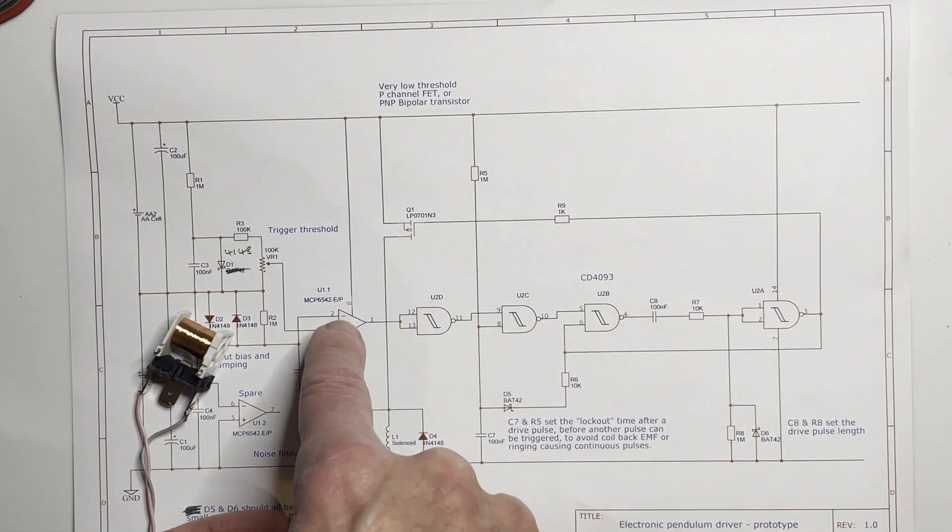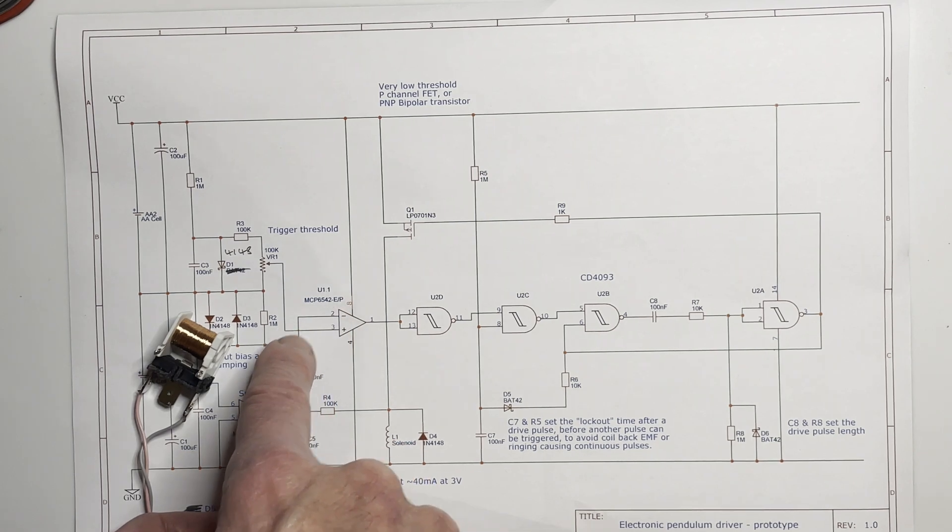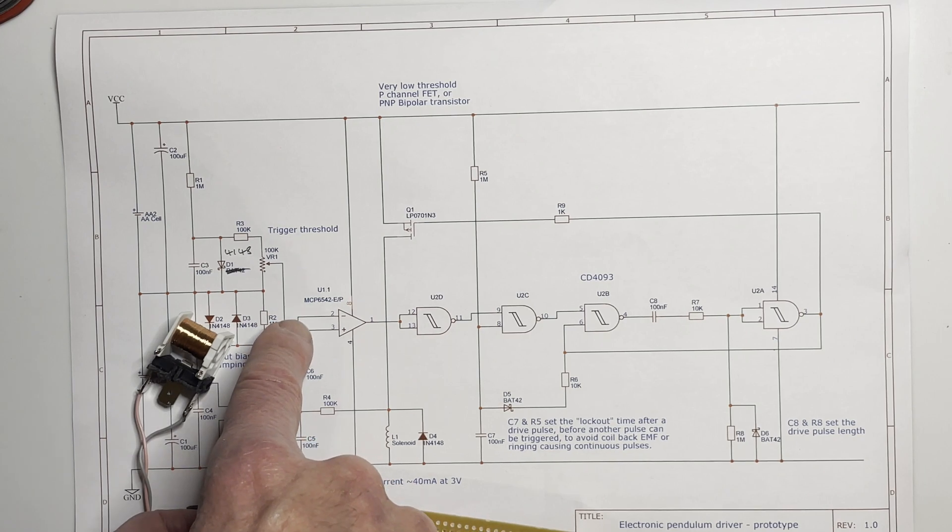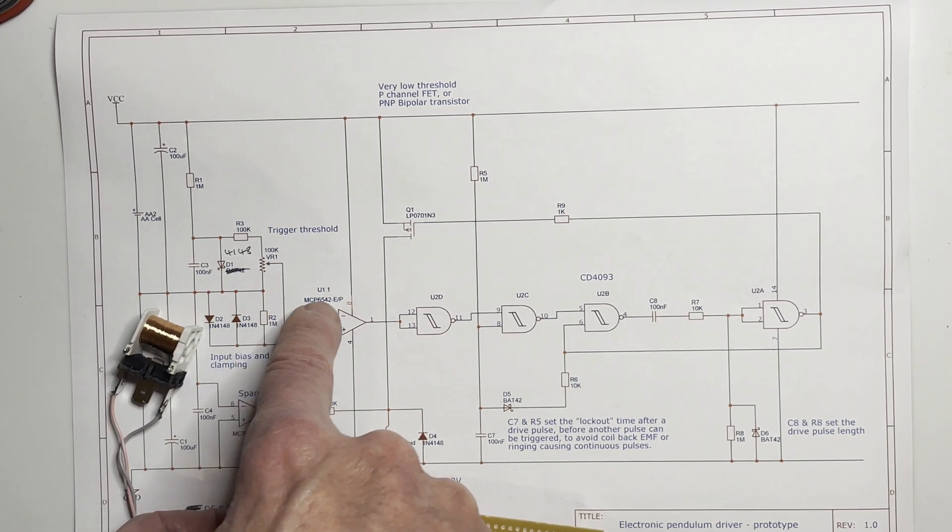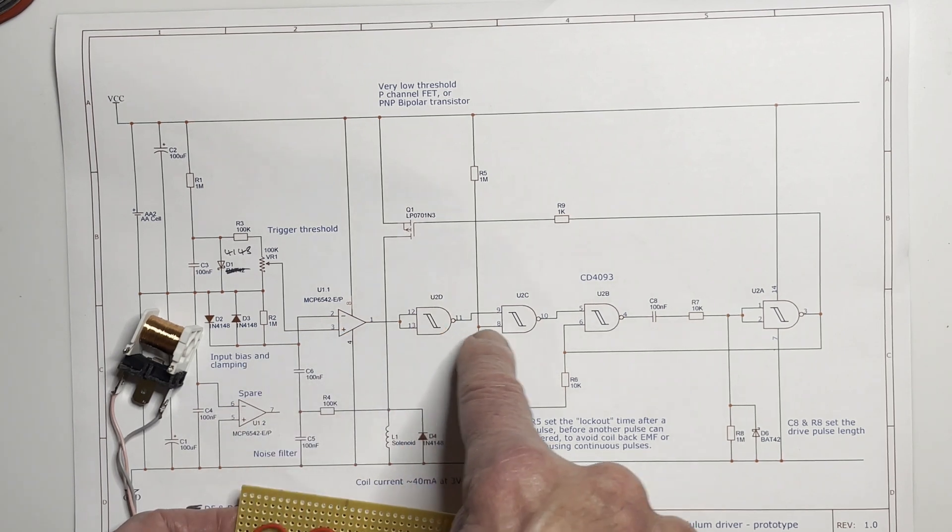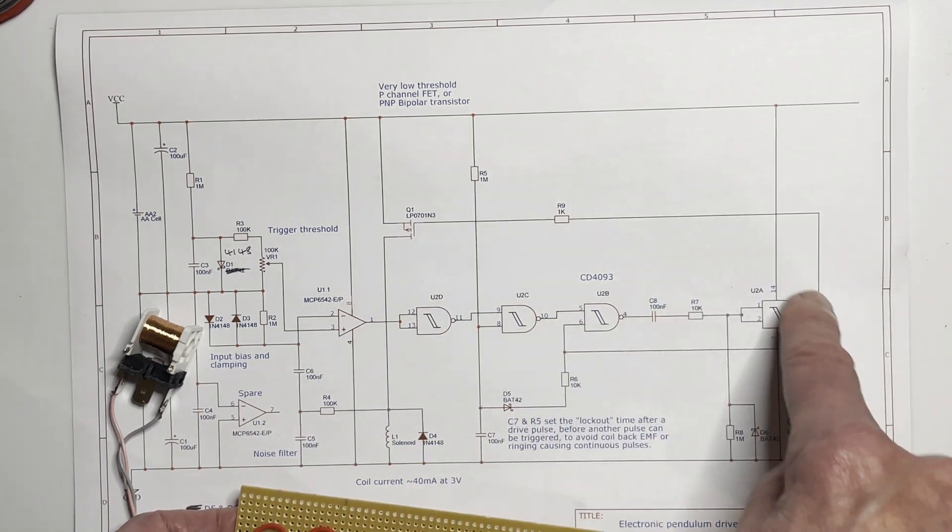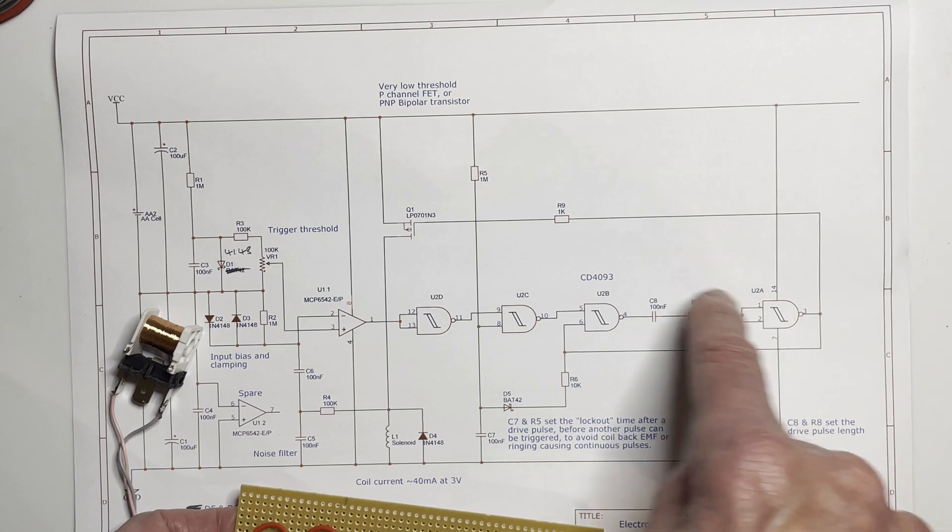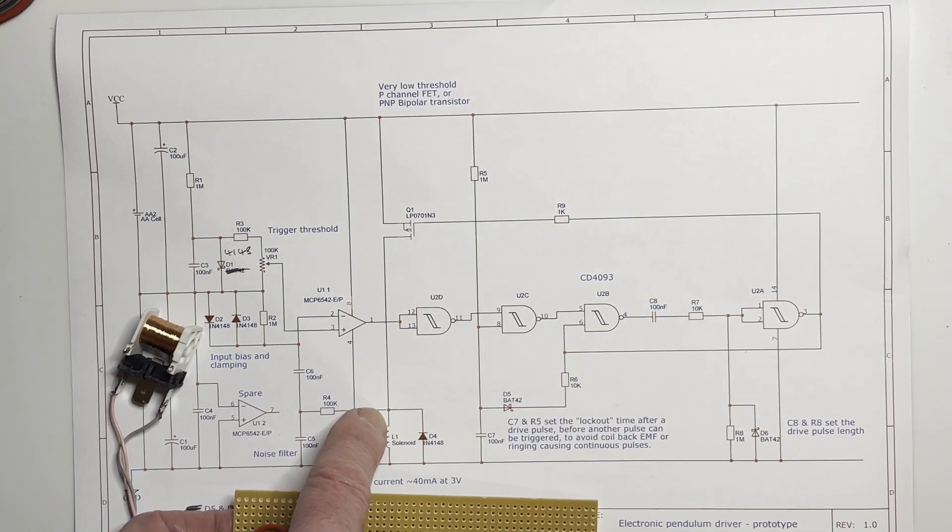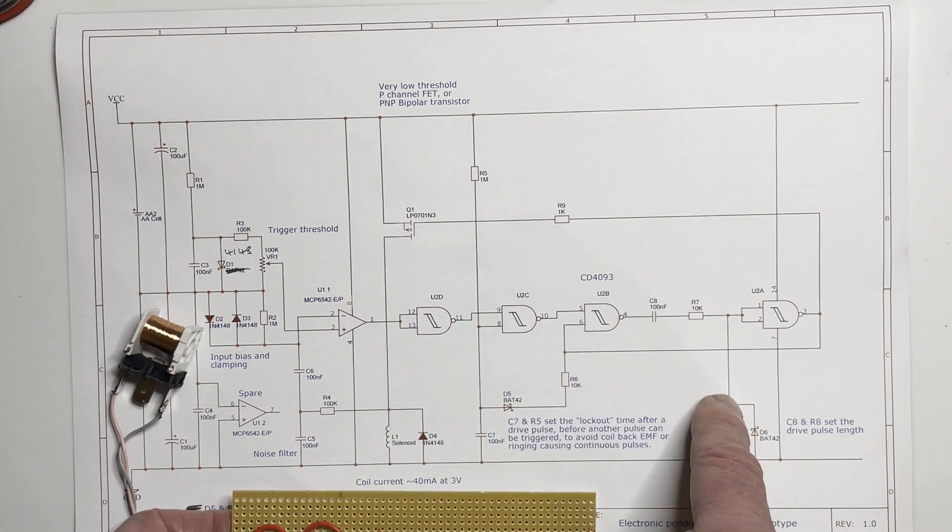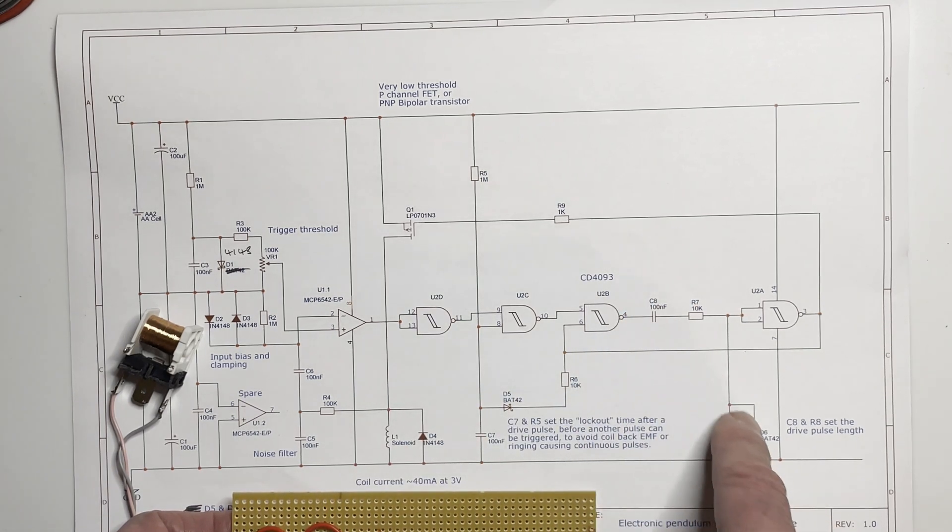So basically when that sees the positive pulse from the coil, or the positive voltage from the coil, as the magnet starts to leave it, assuming you've got it connected the right way around, it fires that which is actually acting as a monostable, a timer, which turns on the transistor and forces full power to the coil for a short time, roughly a tenth of a second or so.